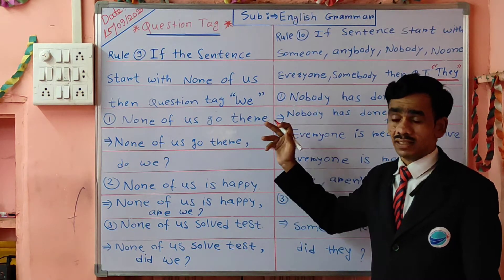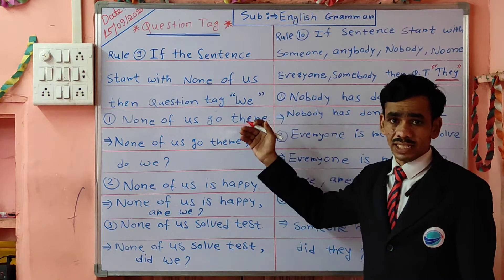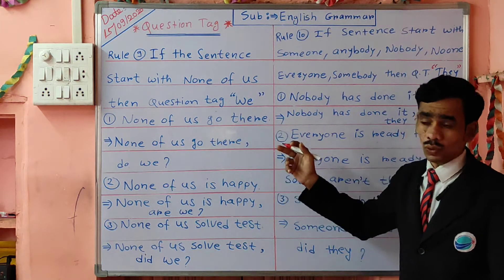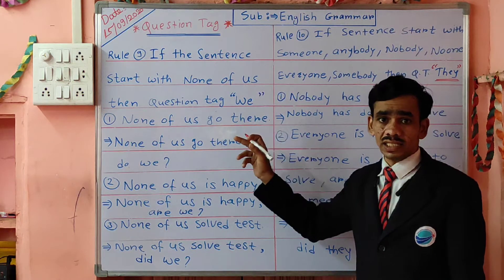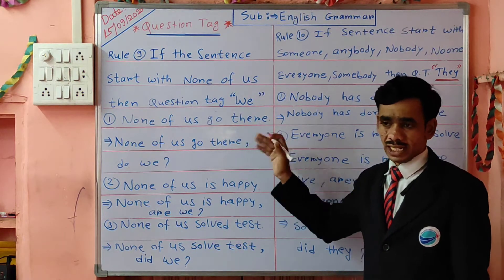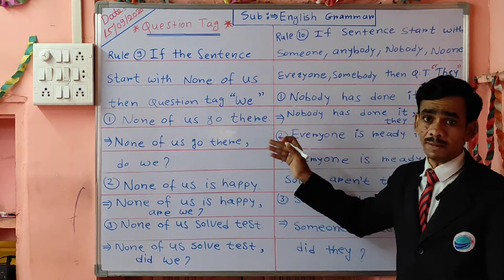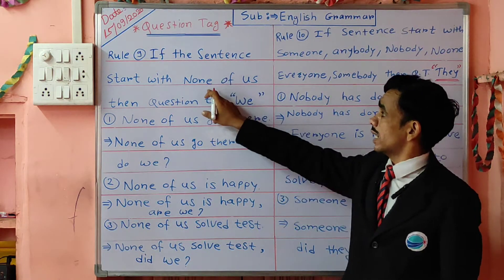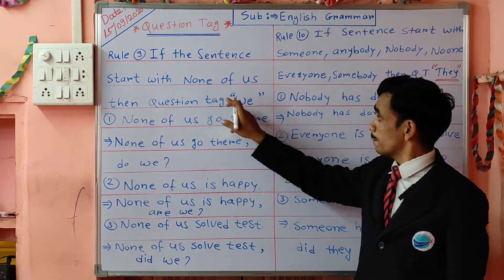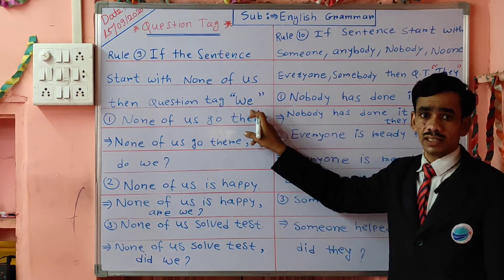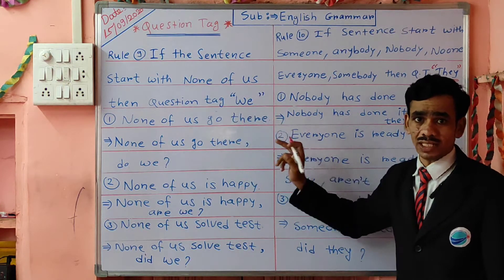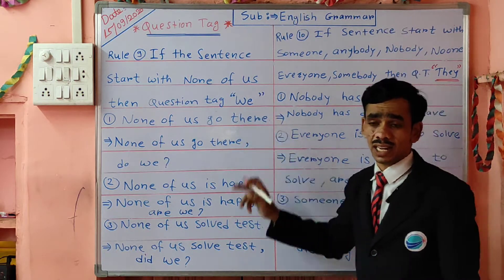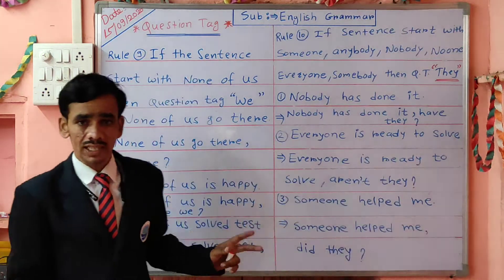The rest of the rules stay as is. Just remember: if the sentence starts with 'none of us,' the question tag at the end will compulsory take 'we.' Understand what I am going to say — if the sentence starts with 'none of us,' take 'we' in the question tag at the last.